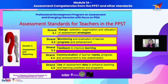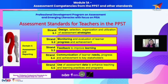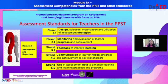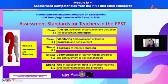The five strands in the assessment and reporting domain are: design, selection, organization, and utilization of assessment strategies; monitoring and evaluation of learner progress and achievement; feedback to improve learning; communication of learners' needs, progress, and achievement to key stakeholders such as students, parents, and other lay audiences; and use of assessment data to enhance teaching and learning practices and programs.